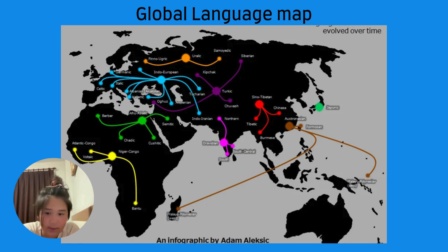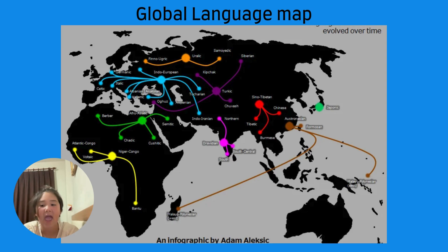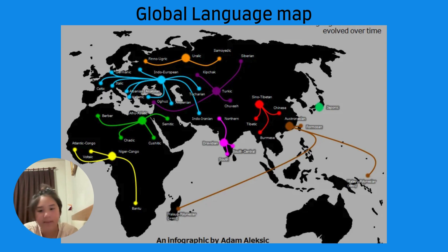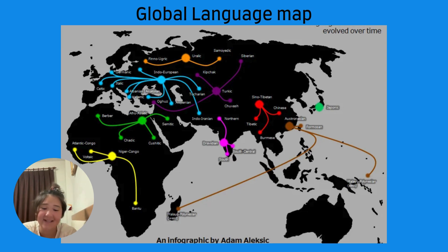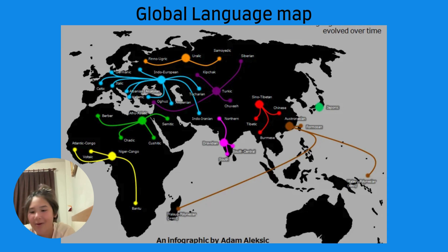Then there is Sino-Tibetan. This family includes Chinese and Tibetan, and it's older than your weird uncle's conspiracy theories. It's ancient, dating back over 6,000 years, and the Chinese writing system is one of the oldest continuously used systems in the world. Ever tried learning Chinese? It's like trying to decode hieroglyphs — but at least those characters have been around for millennia, so they've earned their right to confuse you.